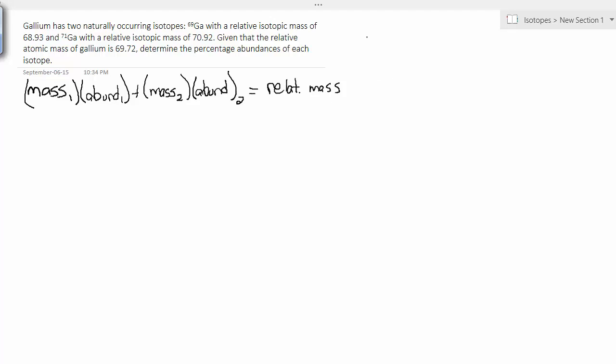All right, this is an algebraic question and I have an unknown. I need to solve for it, so I need to declare some variables. I'm going to say let the abundance of gallium-69 be called x. Now, we might be tempted to say let the abundance of gallium-71 be y, but then we'd be left with two unknowns and we're not equipped to deal with that yet mathematically. So I'm going to say let the abundance of gallium-71 be 1 minus x, because the abundances need to add up to 100%, or in decimal form, they need to add up to 1.